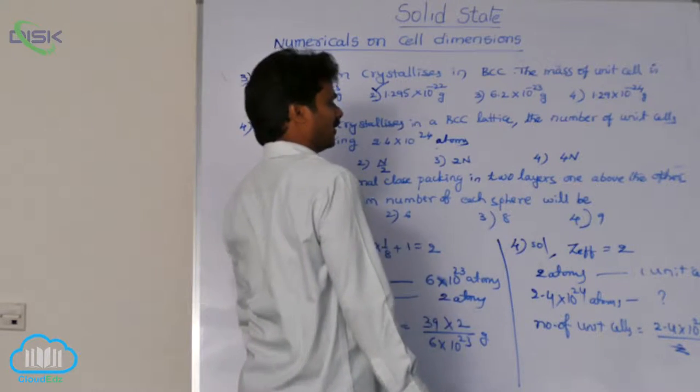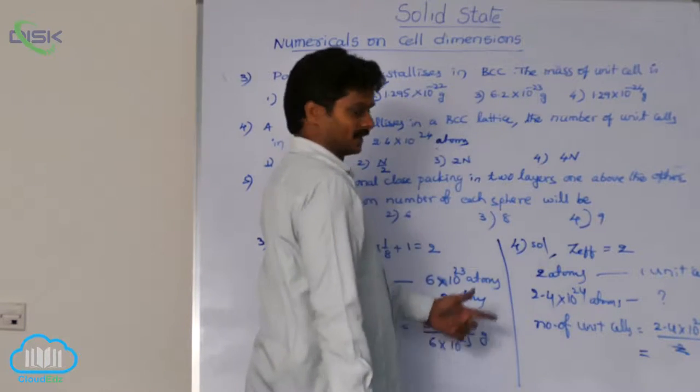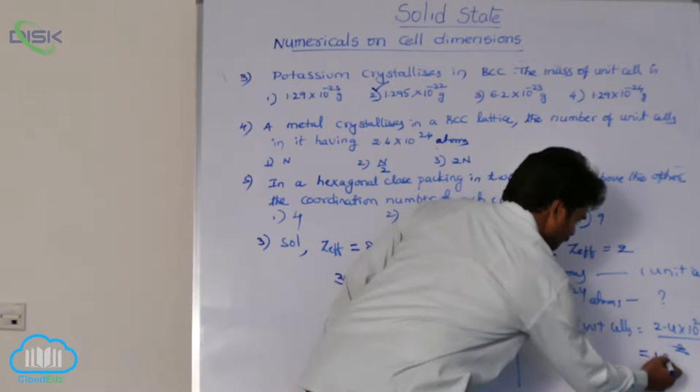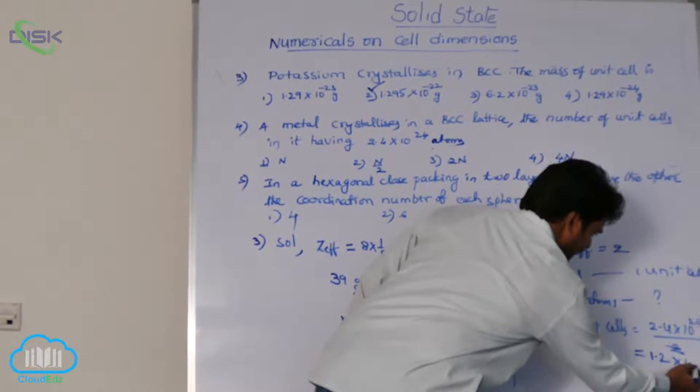What is 2.4 into 2? 1.2. So this is 1.2 into 10 power 24.